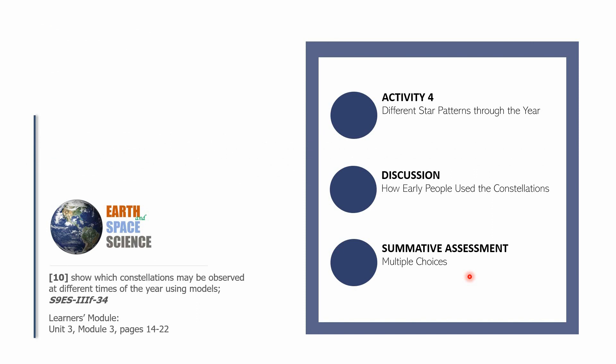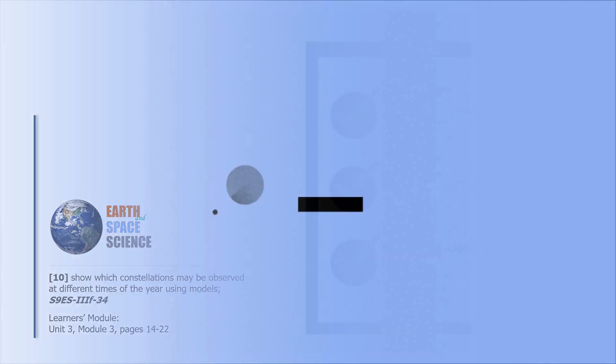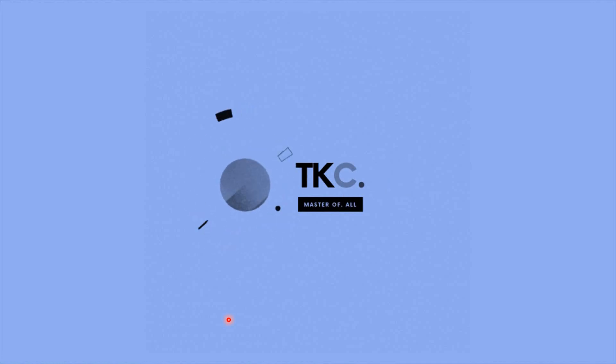This is Earth and Space Science 9, session 15. Congratulations — you are done with the third quarter! We are through with activity number 4 on different star patterns through the year, the discussion about how early people used the constellations, and the summative assessment of four multiple choice items. You have completed the learning competency on which constellations may be observed at different times of the year using models. This has been Sir CJ, and I hope to see you in the next video lesson in physics. Thanks.